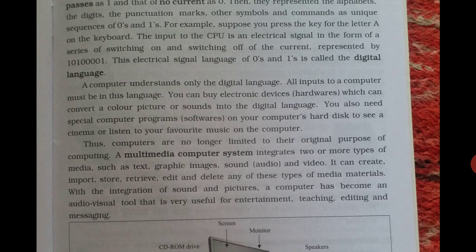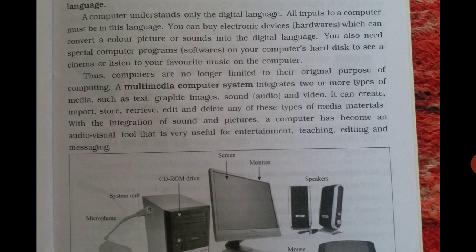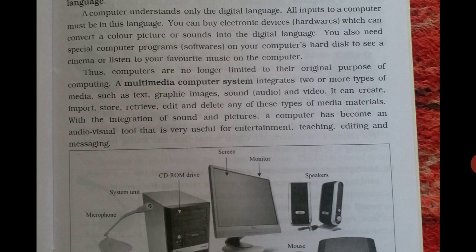You can buy electrical devices which can convert color pictures and sound into digital language. You also need special computer programs installed on your computer to listen to your favorite music or watch cinema. Computers are no longer limited to their original purpose. A multimedia computer system integrates two or more types of media such as text, graphics, images, sounds, and video.